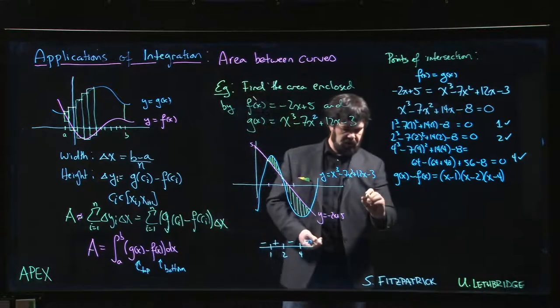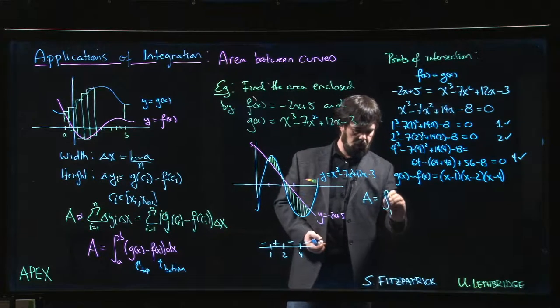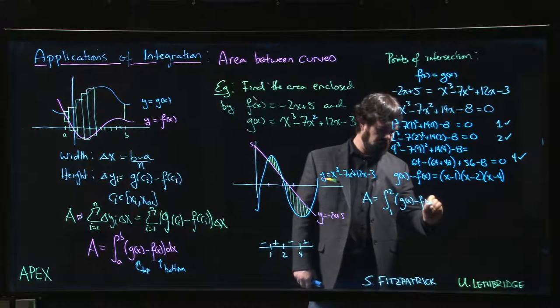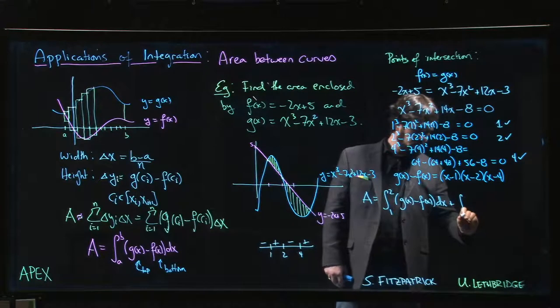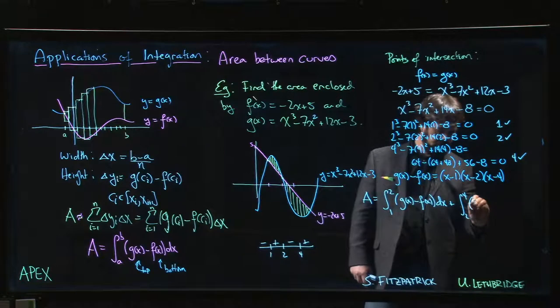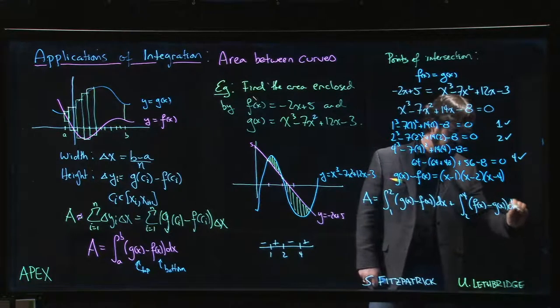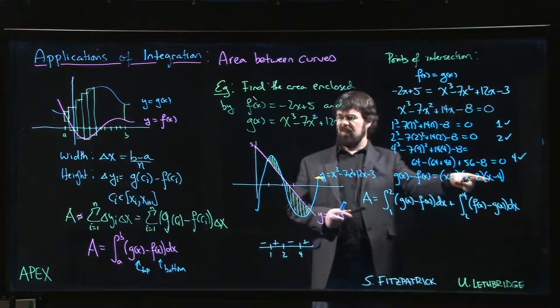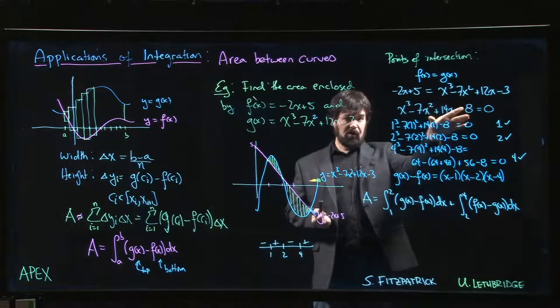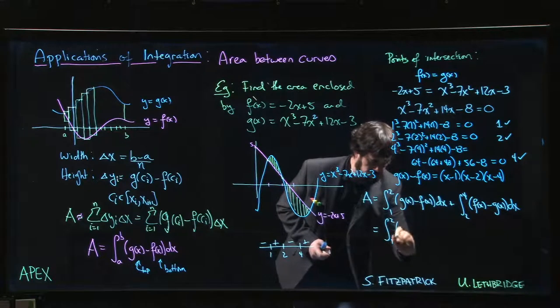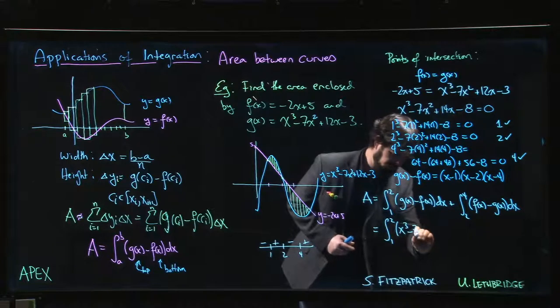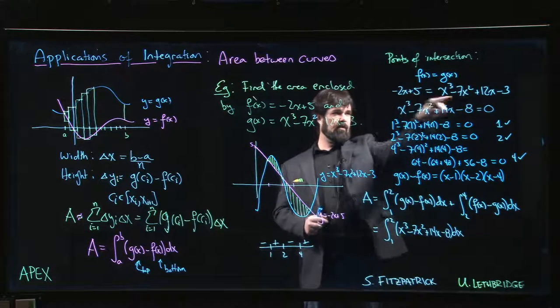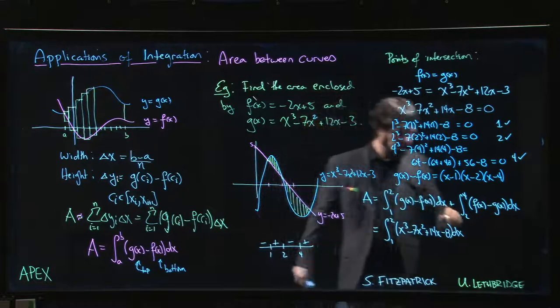So what this tells me is that the area comes in two pieces. I've got to do the integral from 1 to 2, and there g of x minus f of x is positive. And then from 2 to 4, I've got to do f of x minus g of x. So the rest is just plugging things in. We already did g of x minus f of x. We don't want the factored form, that's not going to be easy to integrate. We want polynomials. So it's going to be the integral from 1 to 2 of x³ - 7x² + 14x - 8. You already did the work of simplifying g minus f, so no point in doing it over again.